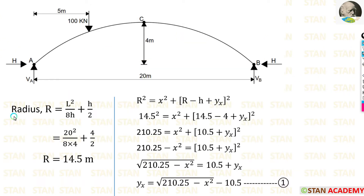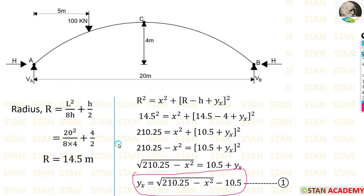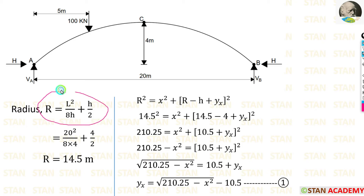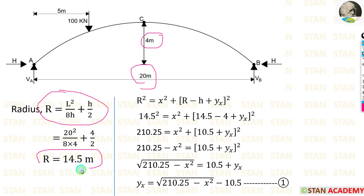Before going to the next step, let us calculate radius R. In the previous video we derived a formula for the radius: L squared by 8H plus H by 2. Here L is the length, 20 meter, and H is the rise of the arch, 4 meter. Finally we are getting R equal to 14.5 meter.